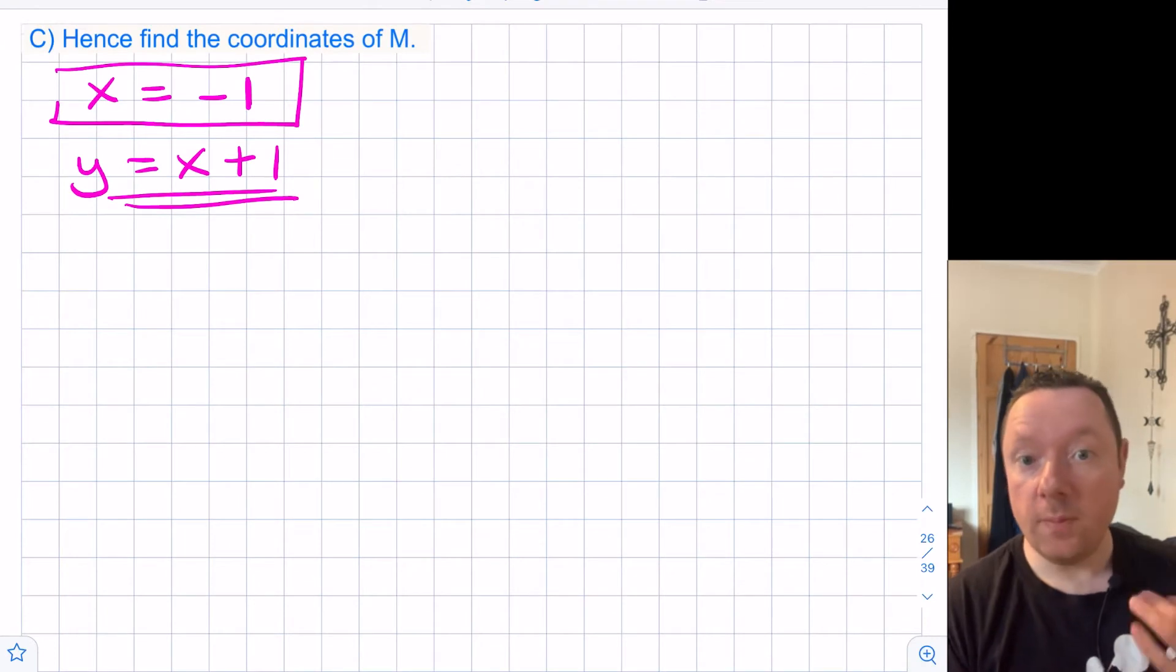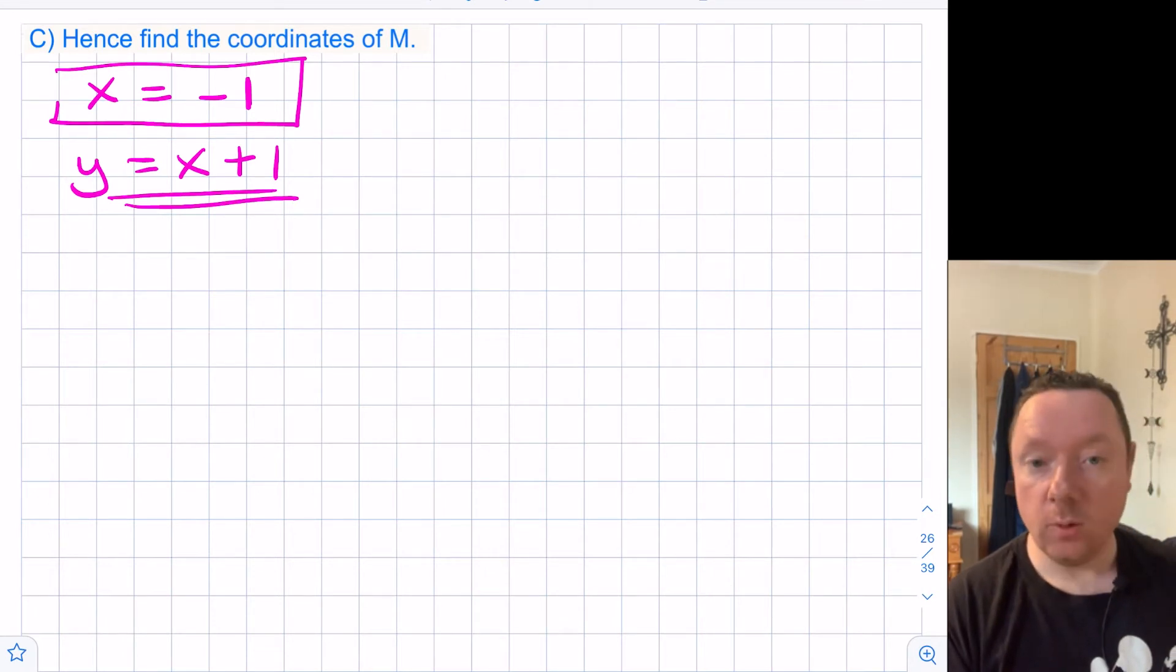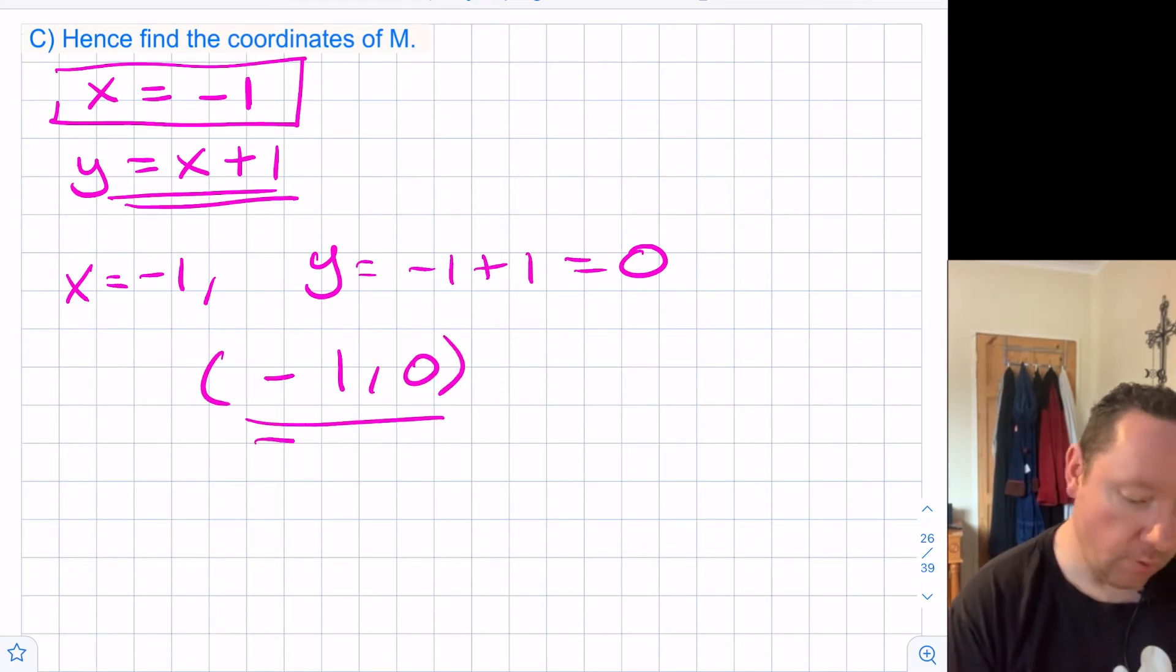Let's find the coordinates of M, which is the point of intersection for these two lines. There's our two line equations. We know that x is -1 so we can substitute it into y. Since x is -1, then y equals -1 plus 1, which is 0. So our point is very simple: (-1, 0). And we're done.